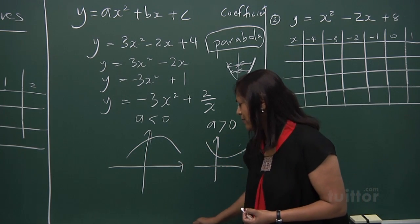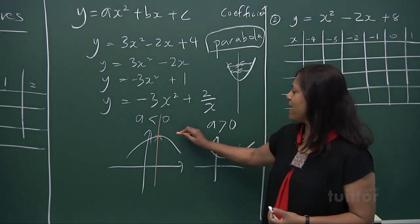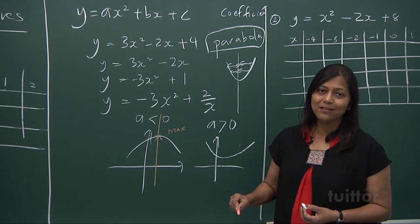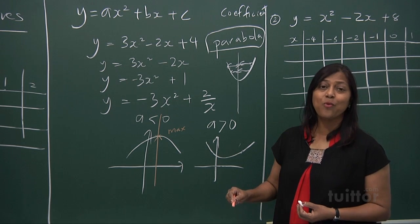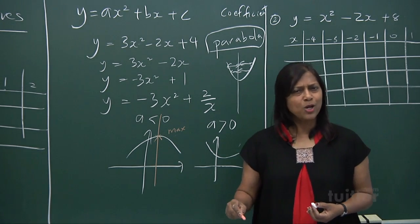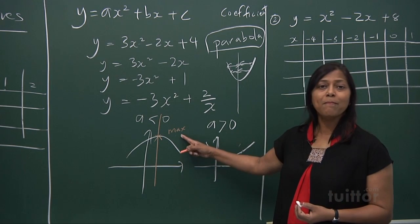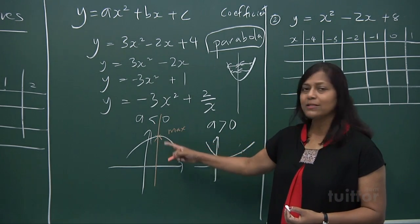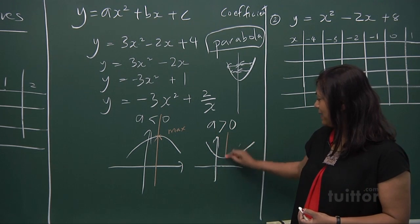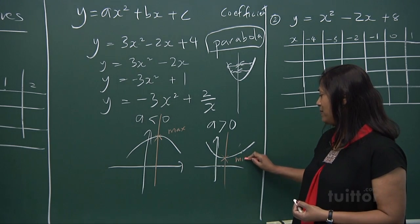A parabola has a line of symmetry, and the turning point is called the maximum point of the curve when a is negative. This information about quadratics is very vital for you to understand the graph — when you plot the graph, you know if you're right or wrong. If a is greater than zero, you get a line of symmetry passing through the minimum point of the graph.